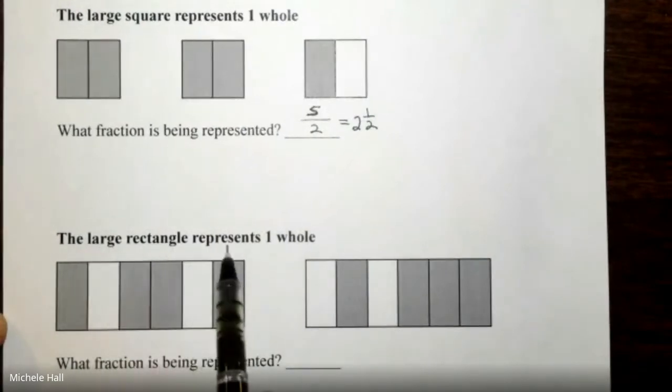The large rectangle represents one whole. Here is the large rectangle. This represents one whole.